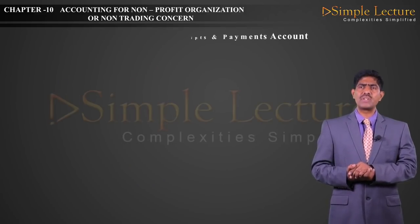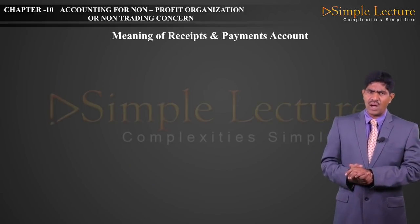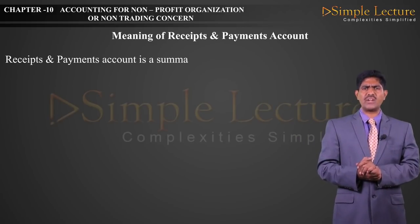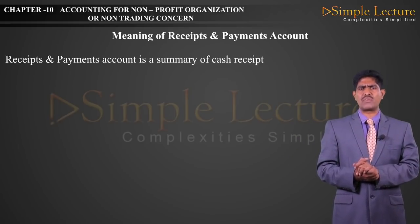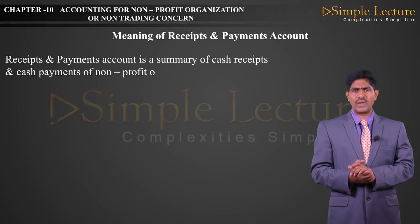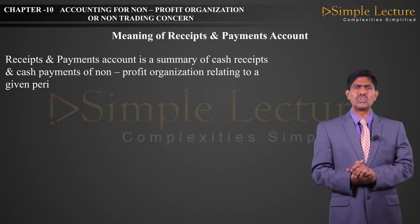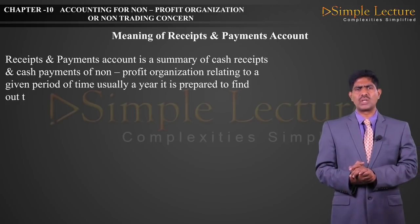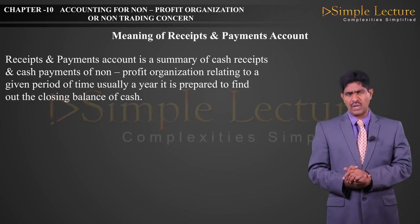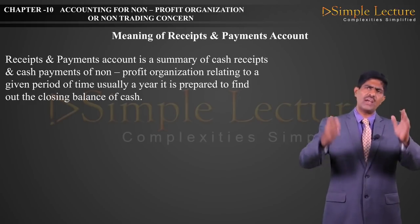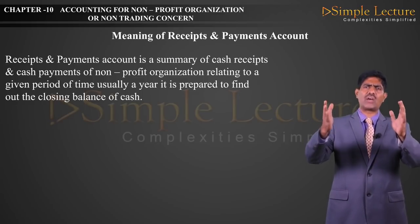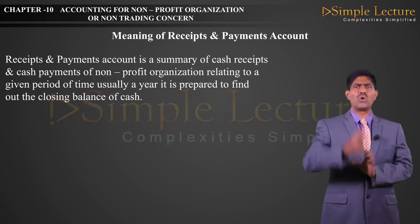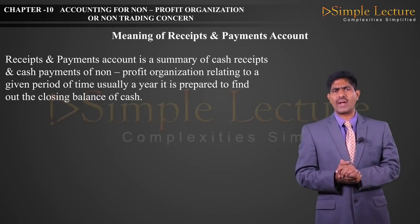Next, the meaning of Receipts and Payments Account: it is a summary of cash receipts and cash payments of a Non-Trading Organization for a given period of time, usually one year. It is prepared to find out the closing balance of cash. In the Receipts and Payments Account, we mainly record cash receipts and cash payments, with the main aim to know the cash balance at the end.